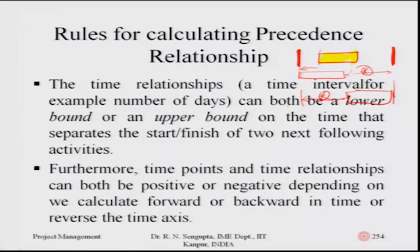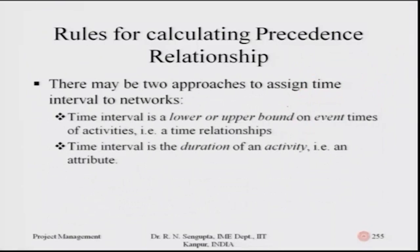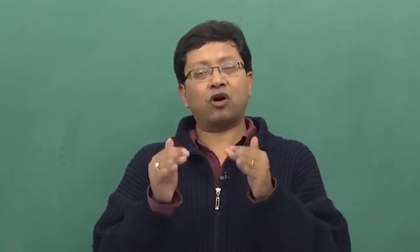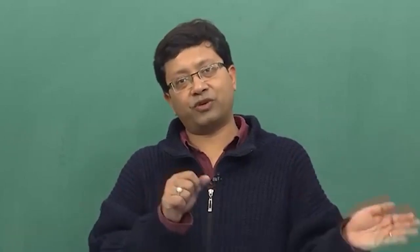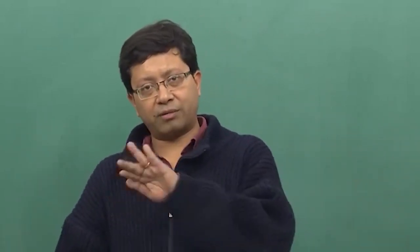The time interval can be both a lower and upper bound in the time separating the start and finish of two successive activities. Time points and time relationships can both be positive and negative depending on how the forward and backward pass methods are calculated. Rather than only considering X, we consider when an activity starts or ends, depending on whether we proceed forward (left to right) or backward (right to left).